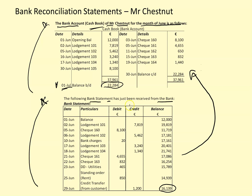To do that, I'm going to start with the credit side of the bank statement, which represents money that Mr. Chestnut has put into the account. I'm going to trace items to the debit side of the bank account or cash book in Mr. Chestnut's own records. Starting with the opening balance of 12,000 — that's fine. Lodgement 101, 102, 103, 104 — all fine. I'm ticking off all identified items. There is a credit transfer which is not included in Mr. Chestnut's records, so I'll mark that with a box and question mark. Lodgement 105 is not in the bank statement, so it is outstanding.